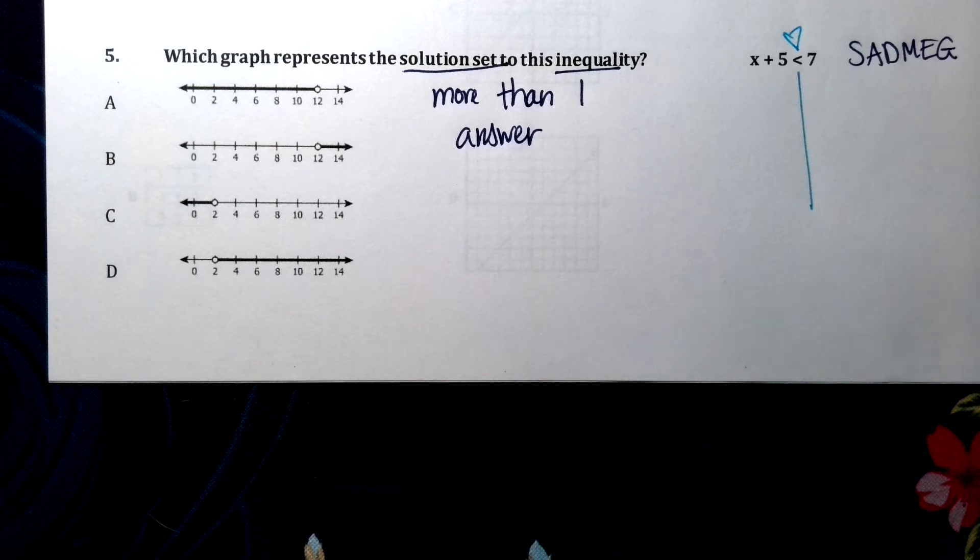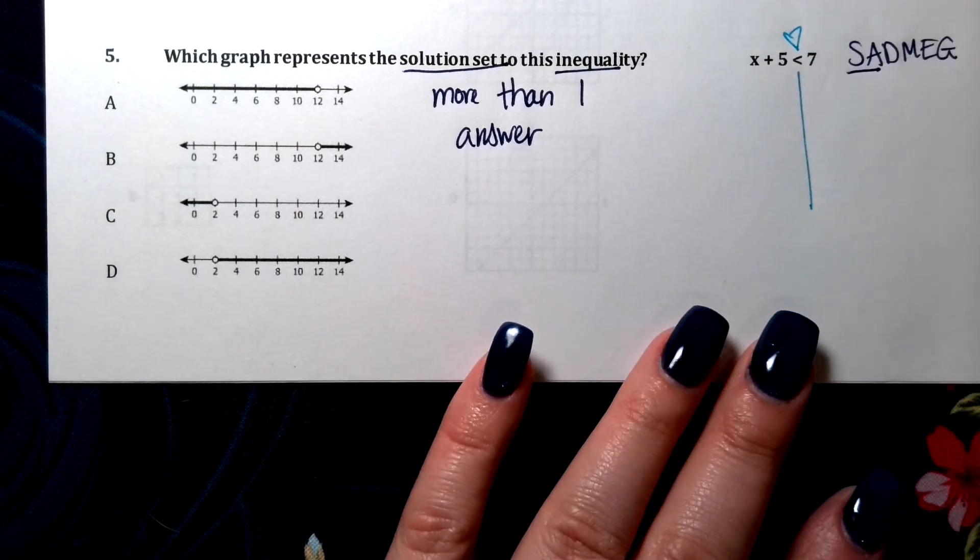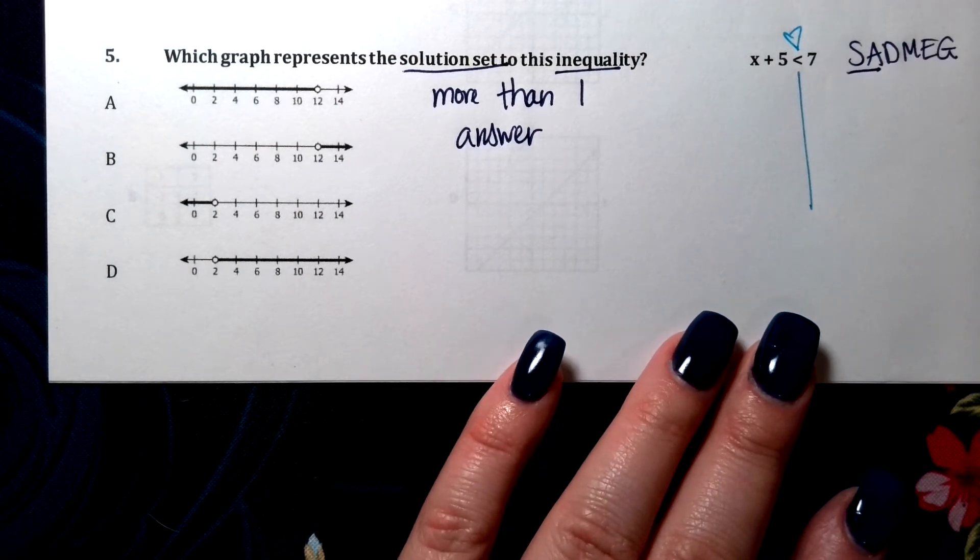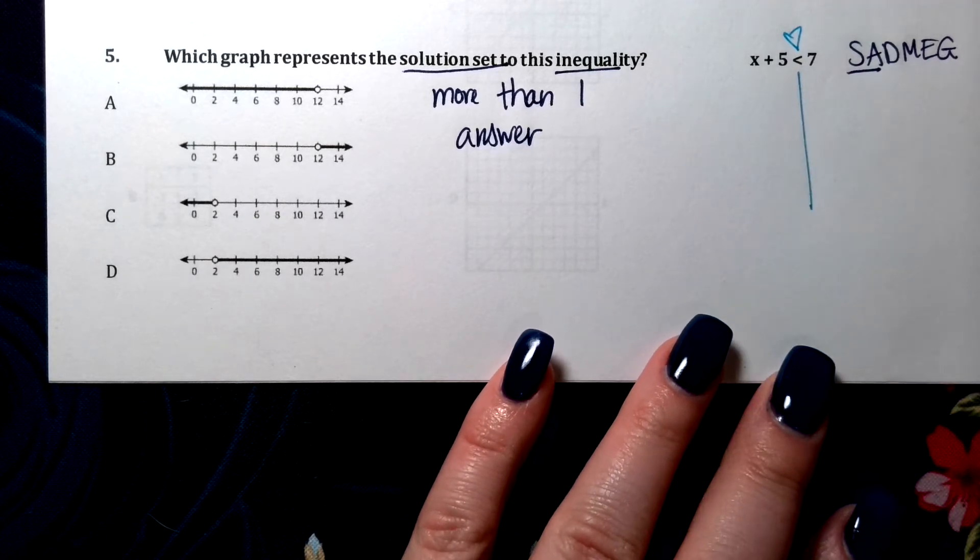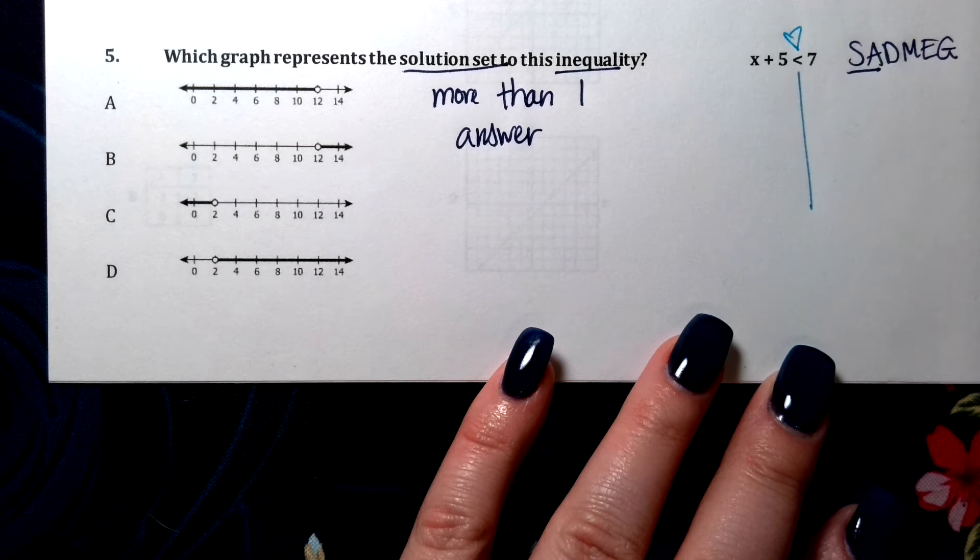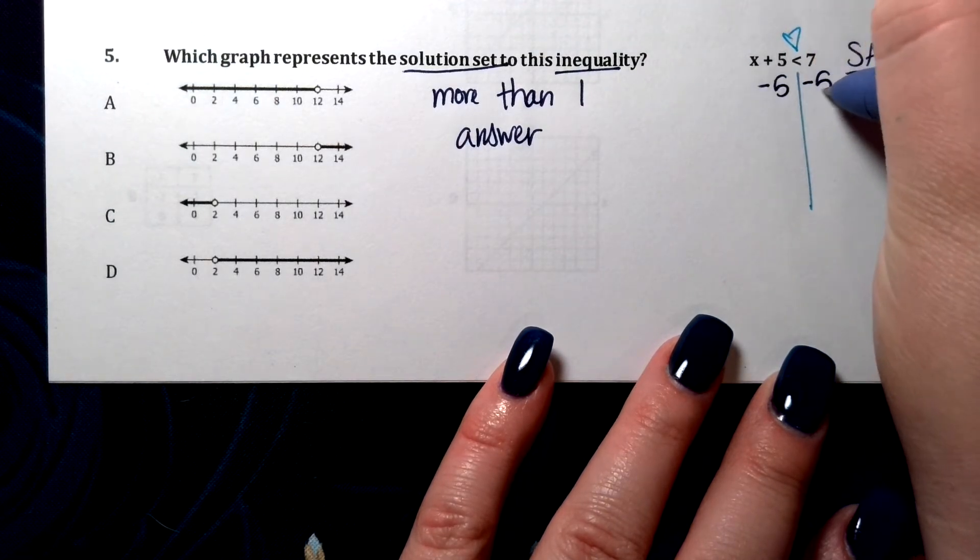So the first thing we need to do, are we adding or subtracting anywhere? Yep, we have x plus 5. What's the opposite of x plus 5?